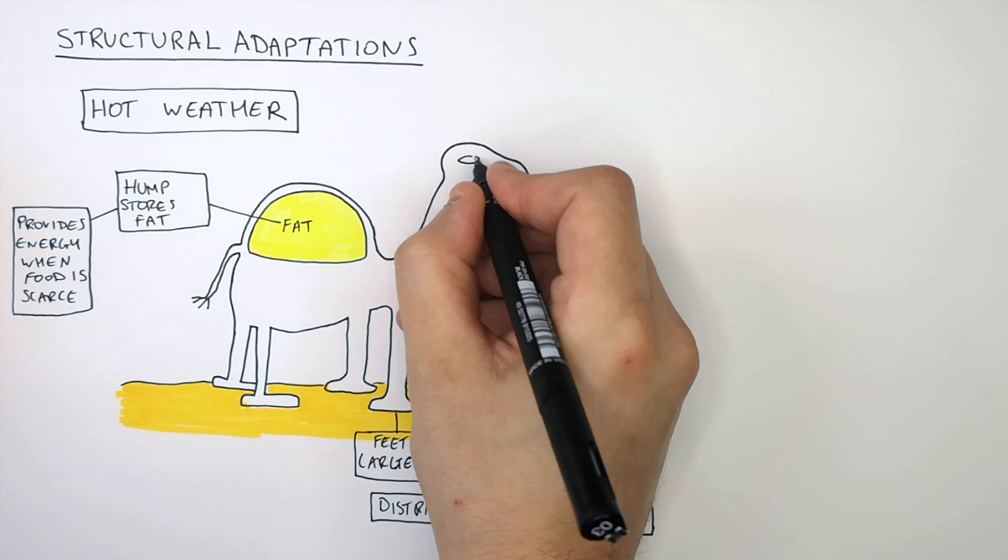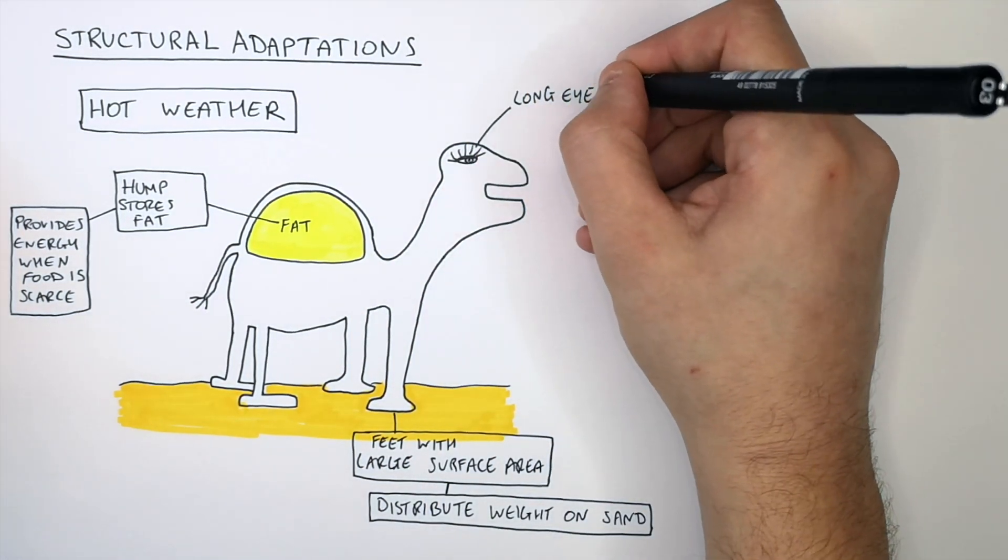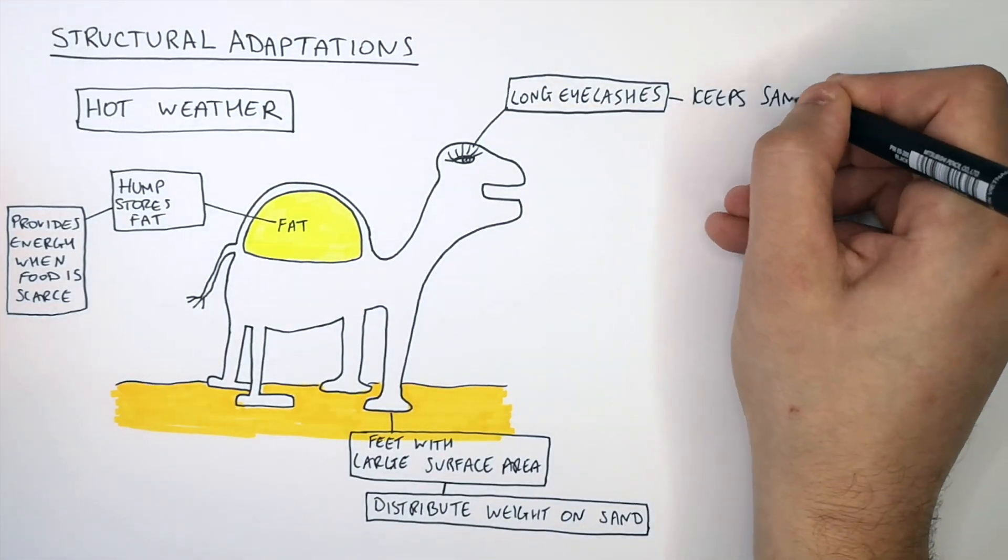The desert can be very windy and it is very sandy. So camels have long eyelashes. The long eyelashes help keep sand out of their eyes.